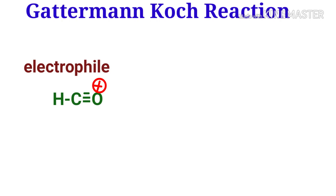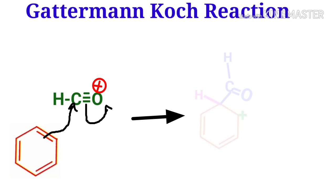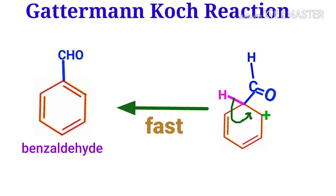In the second step, benzene attacks this carbon atom, the bond opens up, and the charge is neutralized to form a carbocation intermediate. This is the slow step. After losing a proton, it gives benzaldehyde, and this step is very fast.